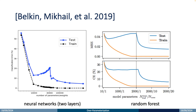Experiments on both two-layer neural networks and random forests demonstrate the double descent curve. The left figure represents the two-layer neural networks and the right figure represents the random forests. The x-axis indicates the number of parameters while the y-axis represents the error. The testing error, shown by the blue line, decreases as the number of parameters increases in both figures. These experiments show that overparameterization occurs not only in deep learning but also in other models when the number of parameters becomes very large.